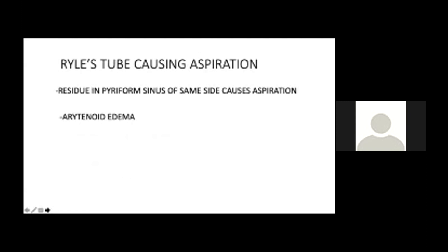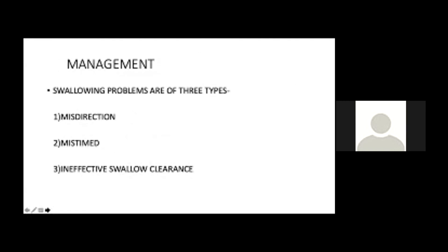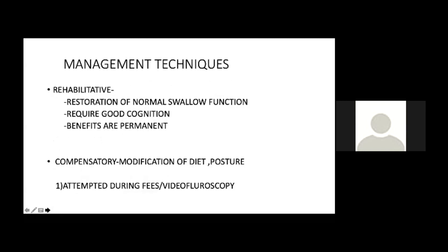Swallowing problems are of three main types: misdirection of the bolus, mistiming of the bolus, or ineffective swallowing clearance. Management has two main approaches: rehabilitative — restoring neural swallow function through exercises requiring good cognition, with permanent benefits — and compensatory — modifying diet, posture, and maneuvers. Compensatory techniques are used during FEES or VFS, have immediate benefit, require limited cognition, but the benefits are not permanent.